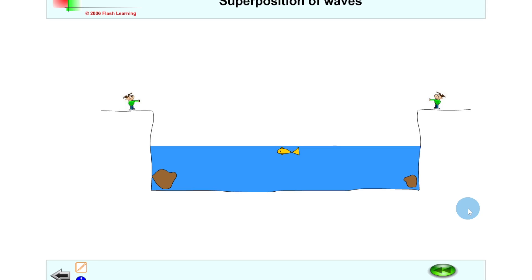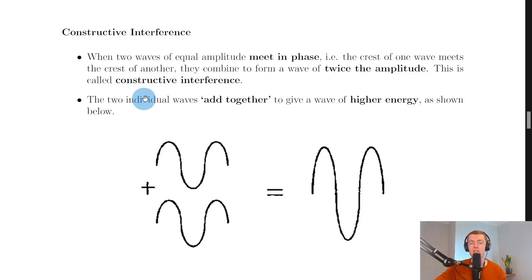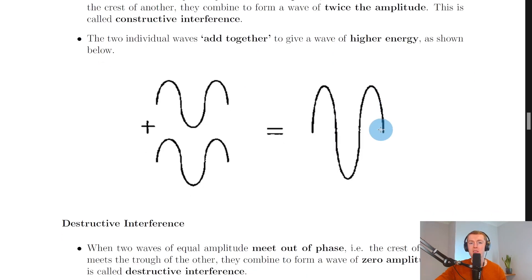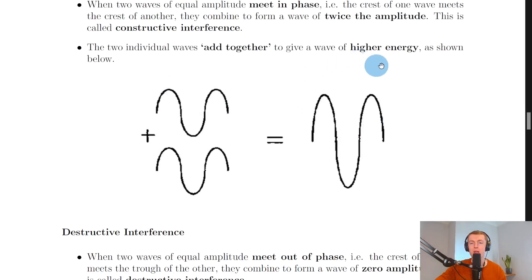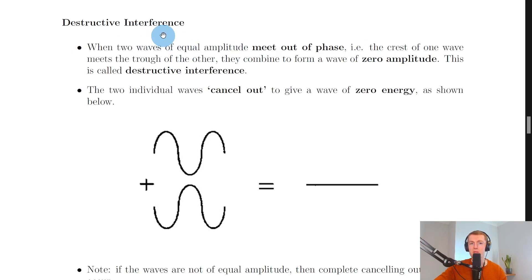These larger and smaller amplitude regions are called constructive and destructive interference points. When two waves of equal amplitude meet in phase — the crest of one meets the crest of another — they combine to form a wave of twice the amplitude. This is called constructive interference. You can see the two individual waves adding together to give a higher amplitude wave, with crest meeting crest and trough meeting trough.